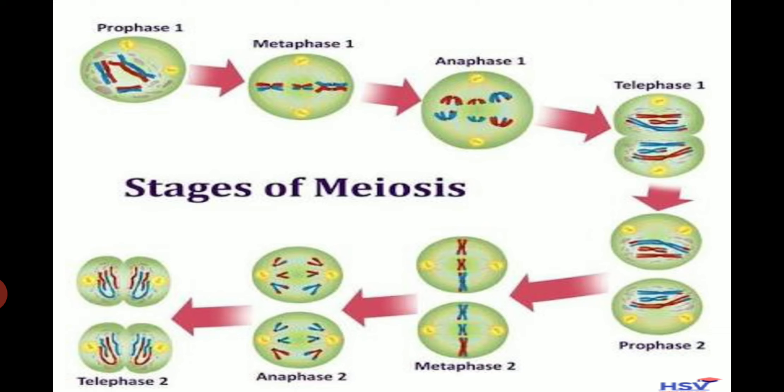We start straight with prophase two, with chromatin clumping again to form chromosomes. In metaphase two they align in the middle of the cell. In anaphase two, the chromatids are pulled apart by the spindle fibers. In telophase two, the cell pinches together and four new granddaughter cells are formed.